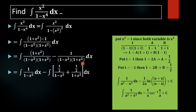Since we have x squared in the denominator, we can put x squared equal to t. Then we will get our new denominator as: 1 minus x squared turns into 1 minus t, and 1 plus x squared turns into 1 plus t. Then we are writing it in the form of partial fractions, that is A over 1 minus t plus B over 1 plus t, and we need to find the values of A and B. We represent x squared over 1 minus x squared times 1 plus x squared as the sum of two terms whose denominators are 1 minus x squared and 1 plus x squared.